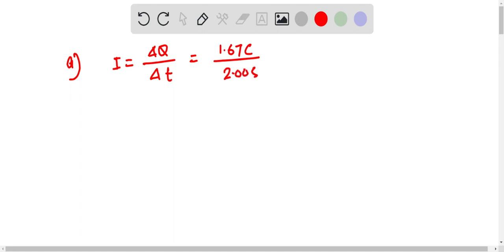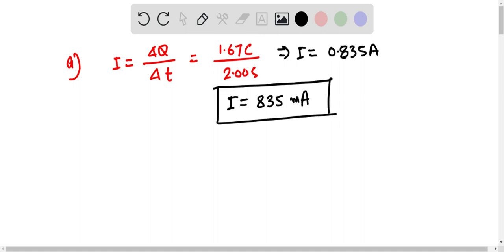over 2 seconds, or the current equals 0.835 amperes, or in terms of milliamperes, the current is 835 milliamperes.